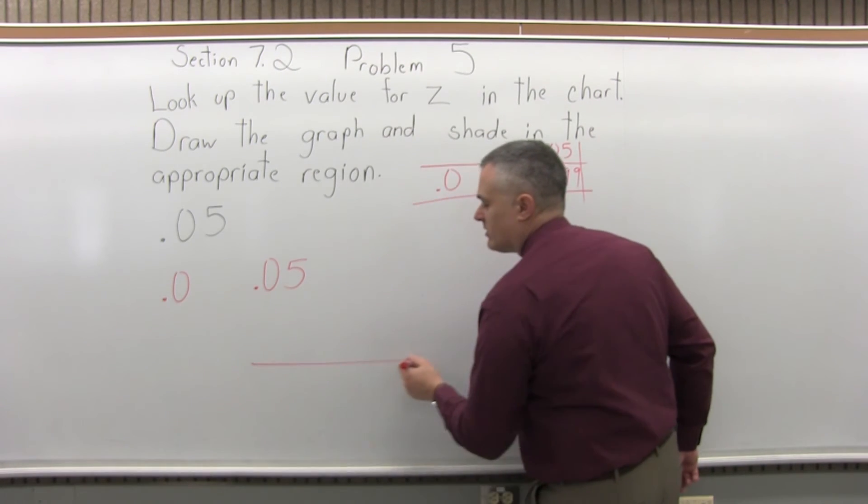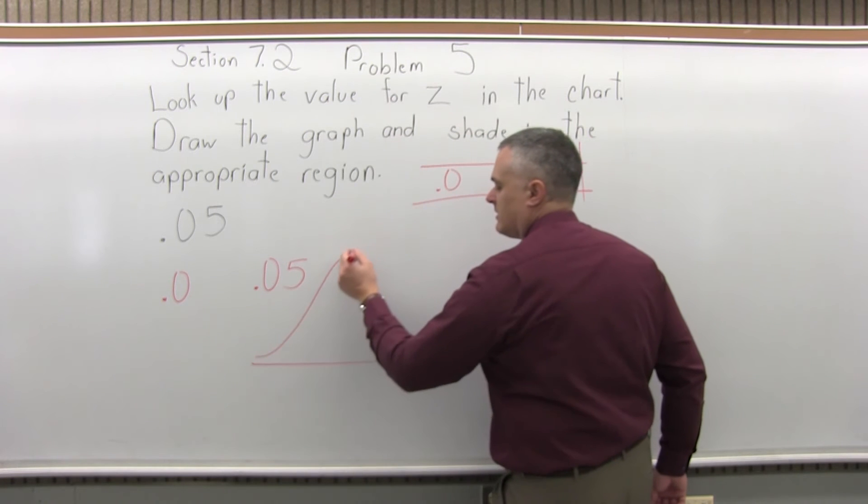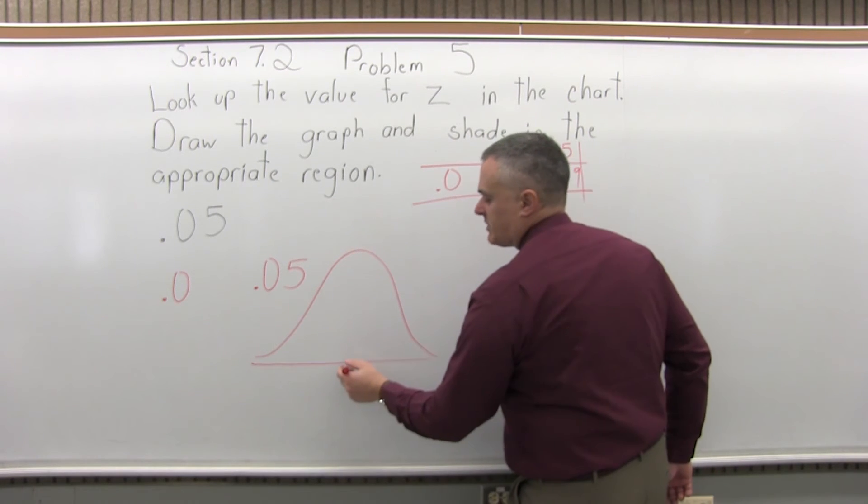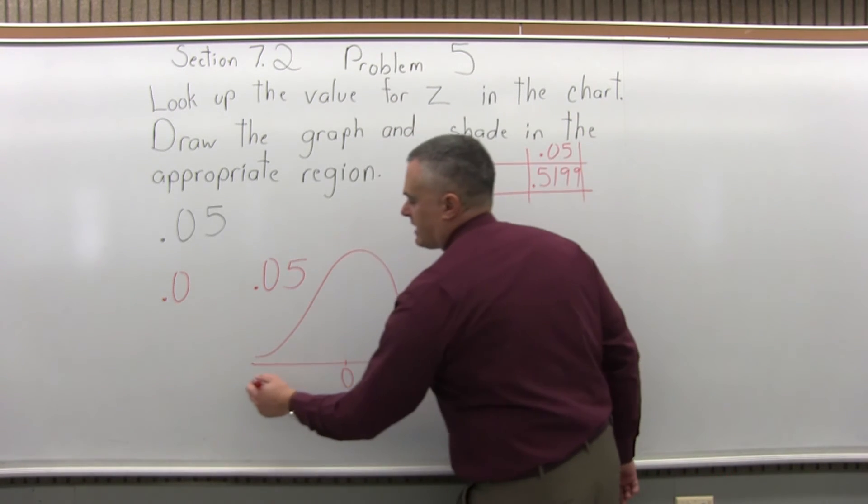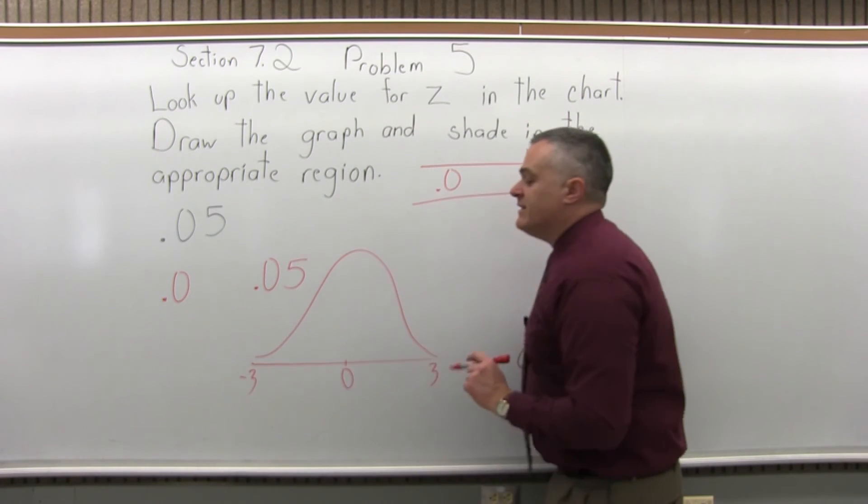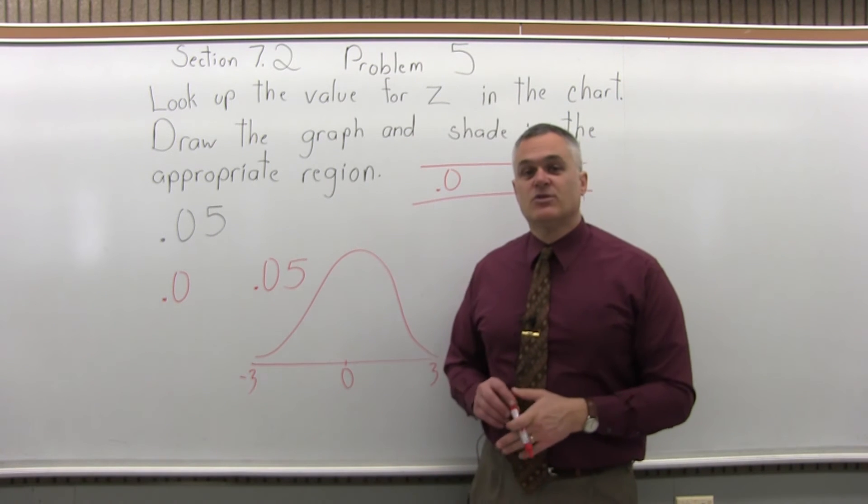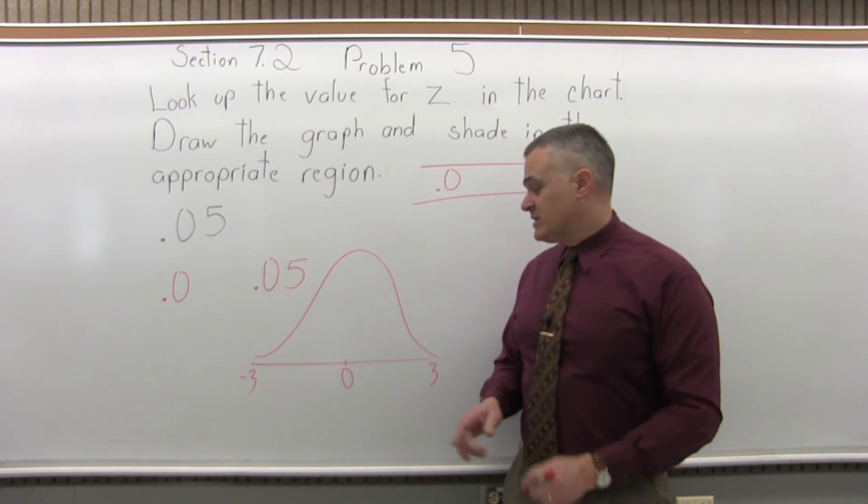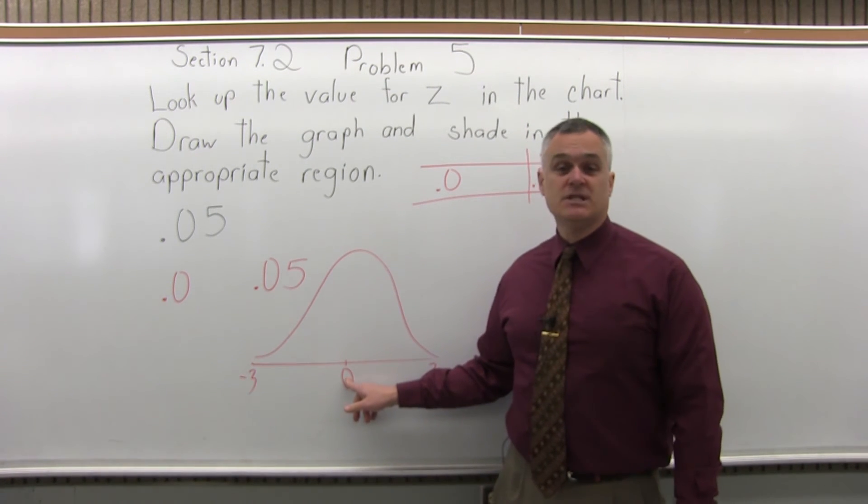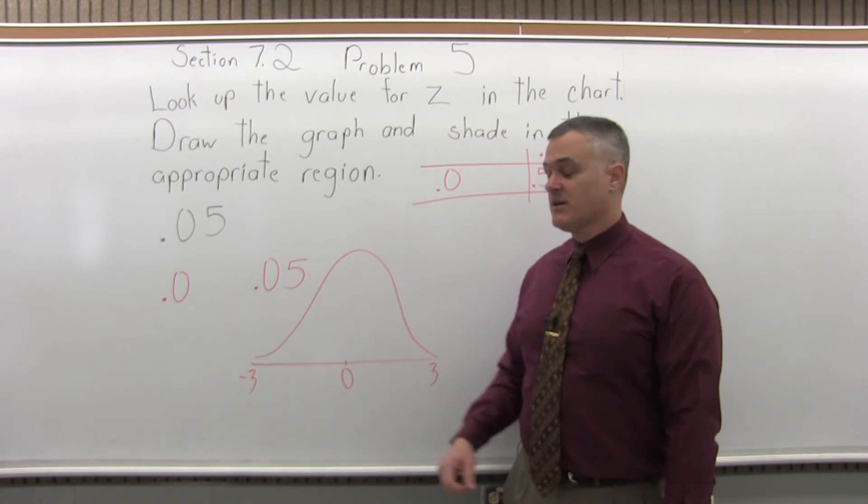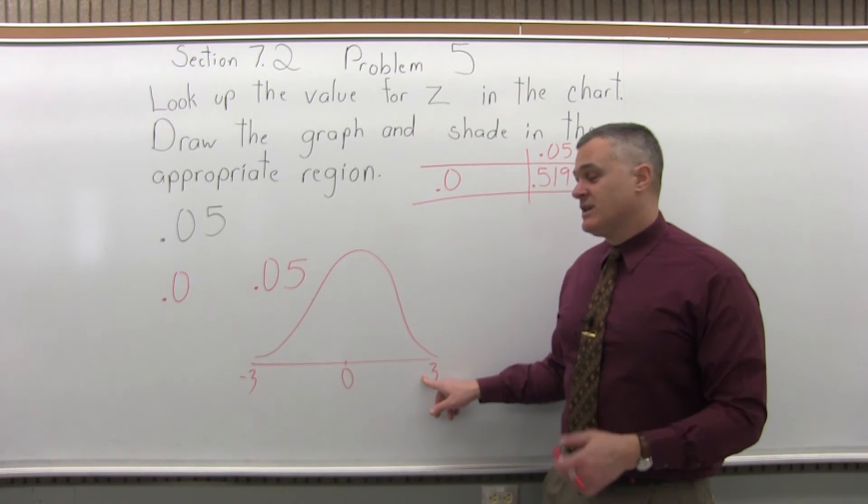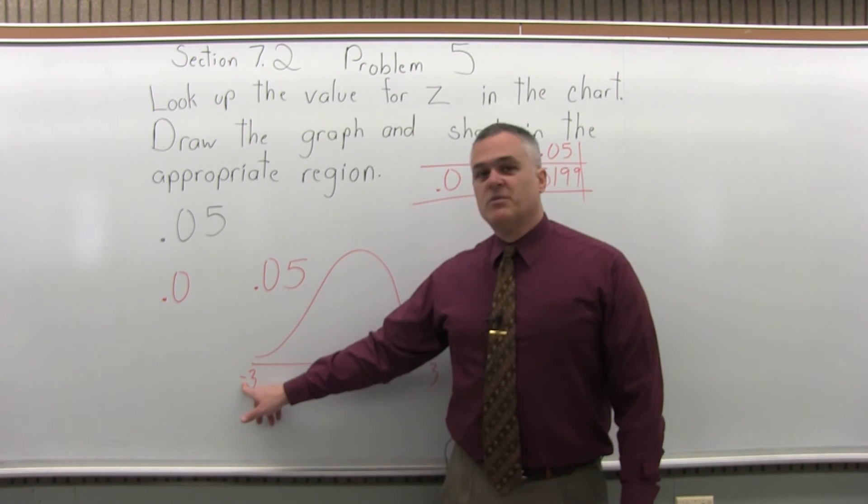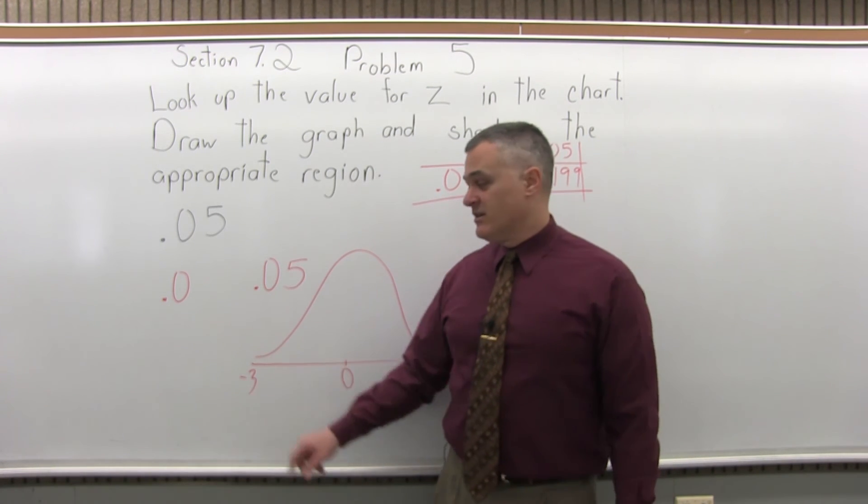So if we look at the bell curve, we put some numbers on the bottom. We put a .0 right in the center, a .3 on the far right, and a .3 on the far left. And these numbers represent how many standard deviations you are away from the average value. .0 in the center means 0 standard deviations away from the average value. The average is right in the center. Positive .3 means three standard deviations larger than the average value, and negative .3 means three standard deviations less than the average value.